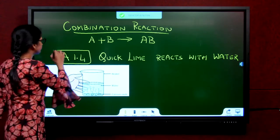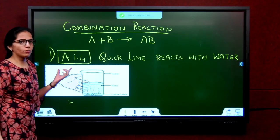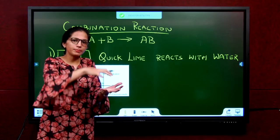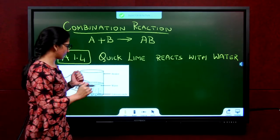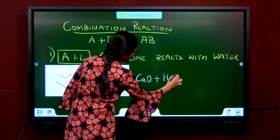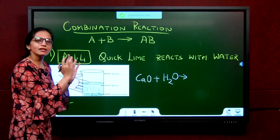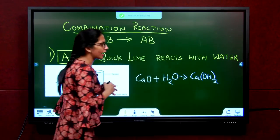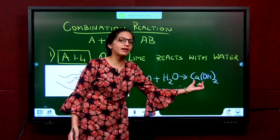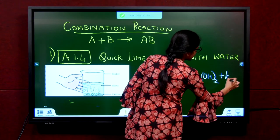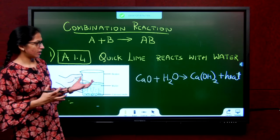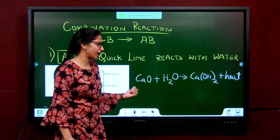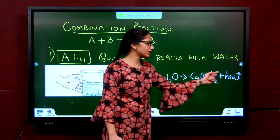Let us see examples. Activity 1.4: take calcium oxide — quick lime — and put it in a beaker of water. You will observe that the quick lime reacts with water, the beaker becomes hot, and you have a calcium hydroxide solution. So, calcium oxide reacts with water to form calcium hydroxide solution plus heat. We have two reactants combining into one product — this is a combination reaction and also an exothermic reaction.